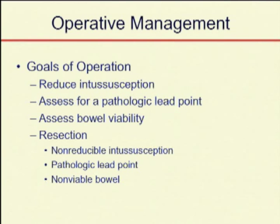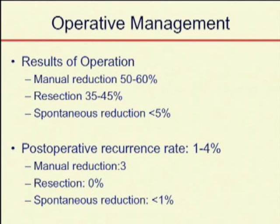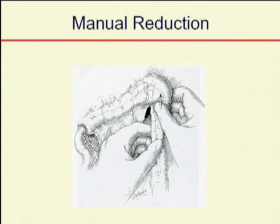The outcomes from operative reduction are good. If you think everything is viable and find no evidence of a lead point, you can just reduce the bowel. There is a reintussusception rate, but it is low, and the recurrence rate is relatively low. If you resect, the recurrence rate is extremely low, somewhere approaching 0%.